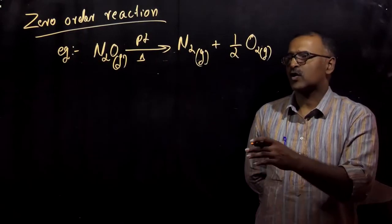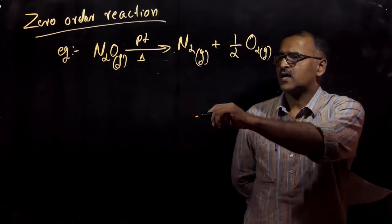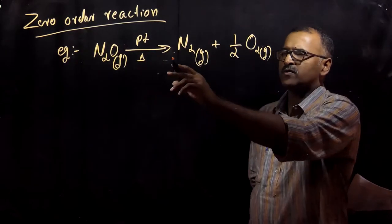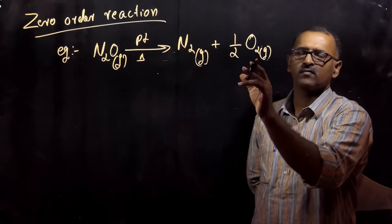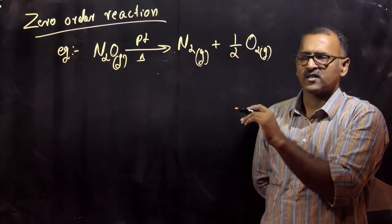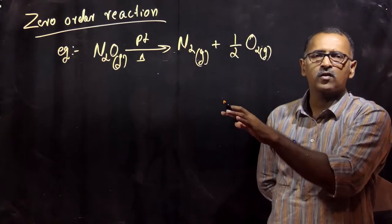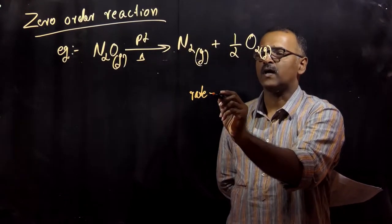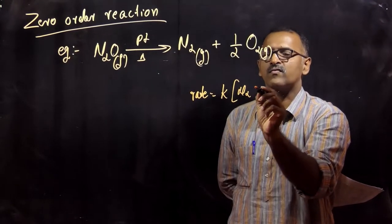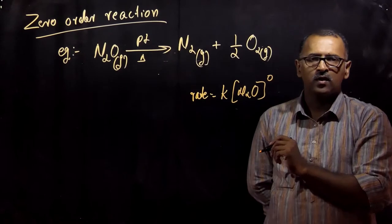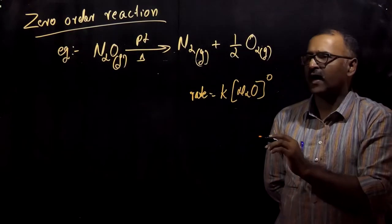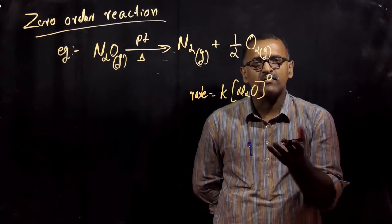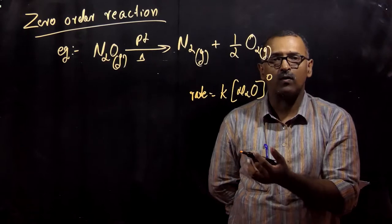An example of a zero order reaction is the decomposition of N₂O in the presence of platinum at high temperature: N₂O → N₂ + ½O₂. This is a gas-phase reaction and a zero order reaction, meaning the rate equals K into concentration of N₂O to the power of zero. Zero order reactions are very common in heterogeneous catalysis and enzyme catalysis.